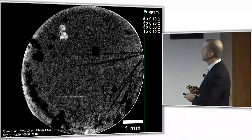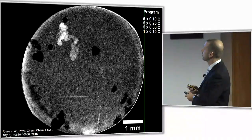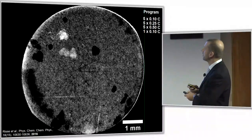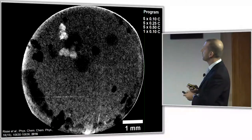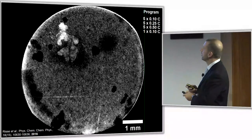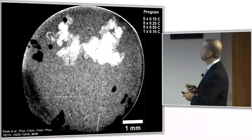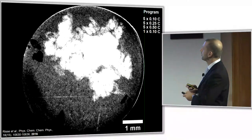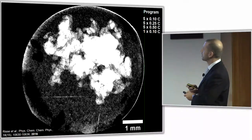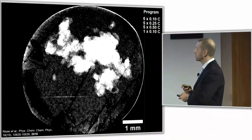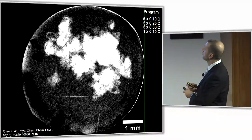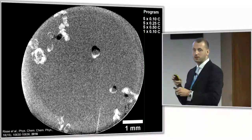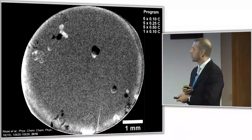Now we go to a higher C-rate, and as you can see, the ring and dendrite formation look different. Going to an even higher rate, we can also see the evolution of dry areas in the cathode material — an effect also seen in this morning's keynote talk. But when you go back to 1C, you see a recovery of these dry areas.